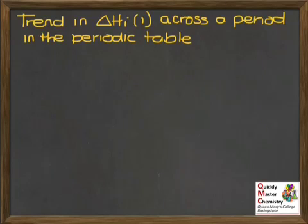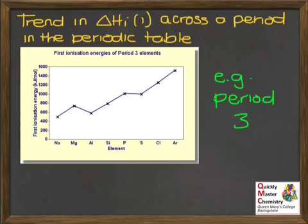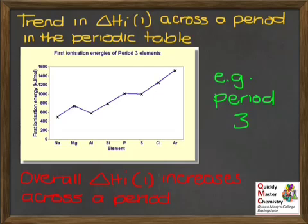Next, we'll look at the trend in first ionisation enthalpy as we move across a period. Taking period 3 as an example, looking at the graph as we move left to right from sodium to argon, the overall trend is that first ionisation enthalpy is increasing across the period. There are a few small irregularities along the way, which can be explained later through detailed electronic configuration ideas, but the key trend is that first ionisation enthalpy increases as you go across a period.